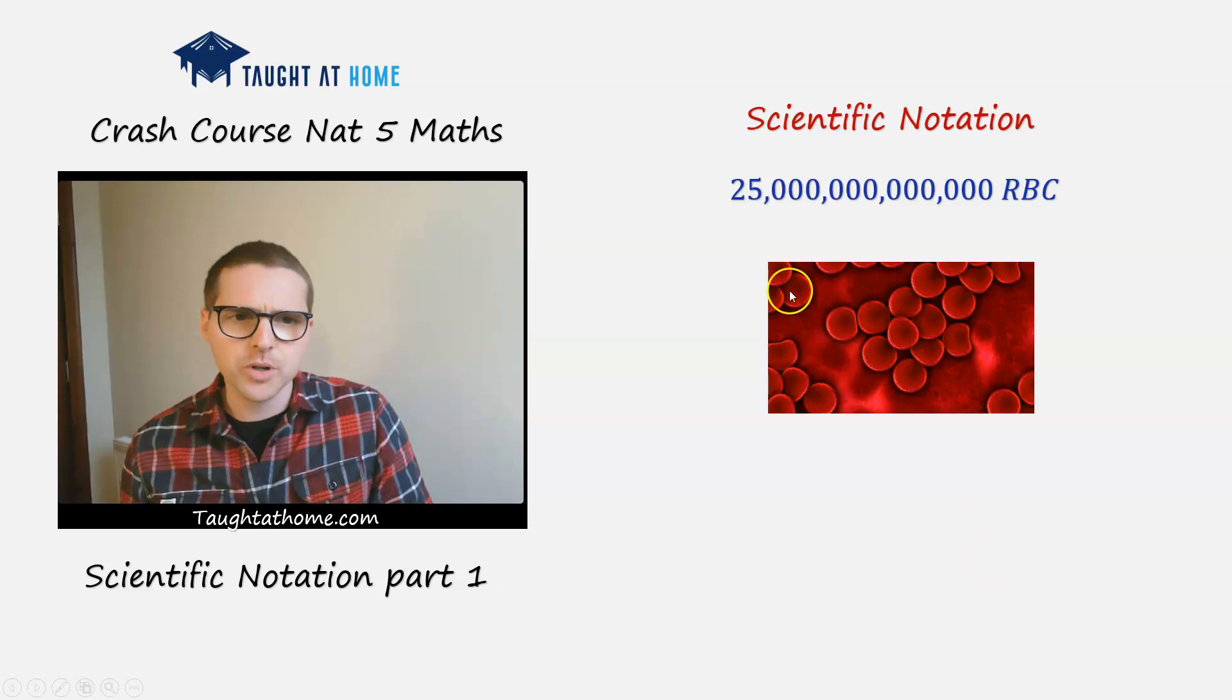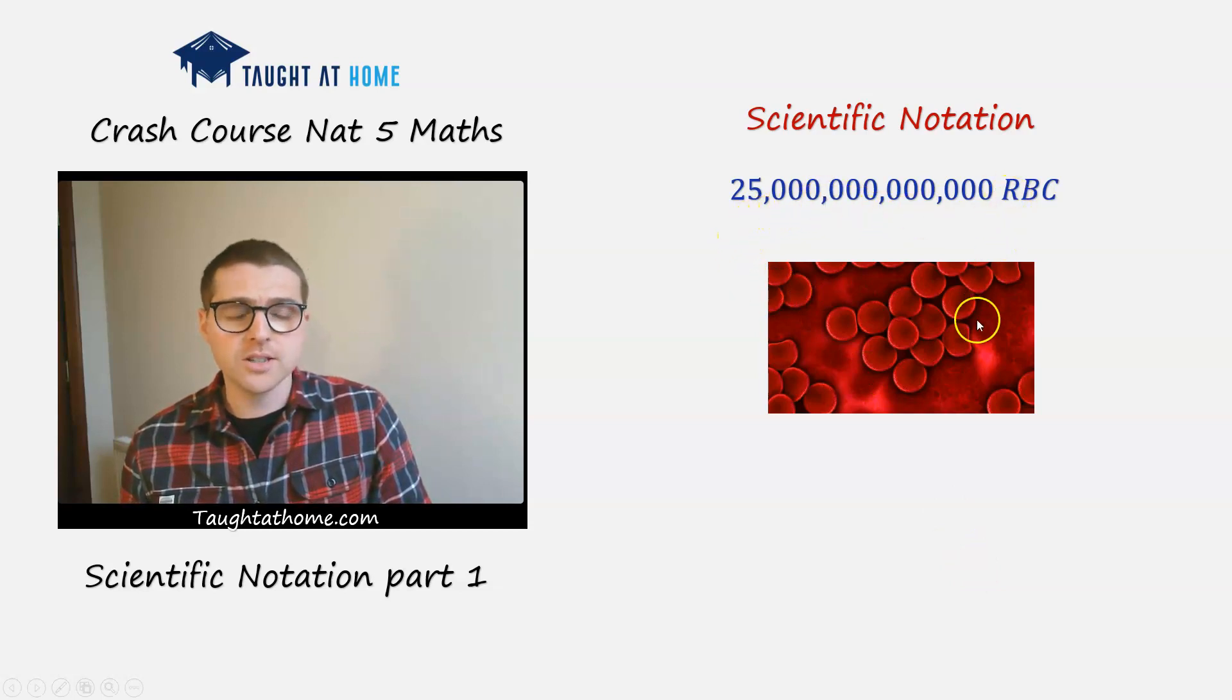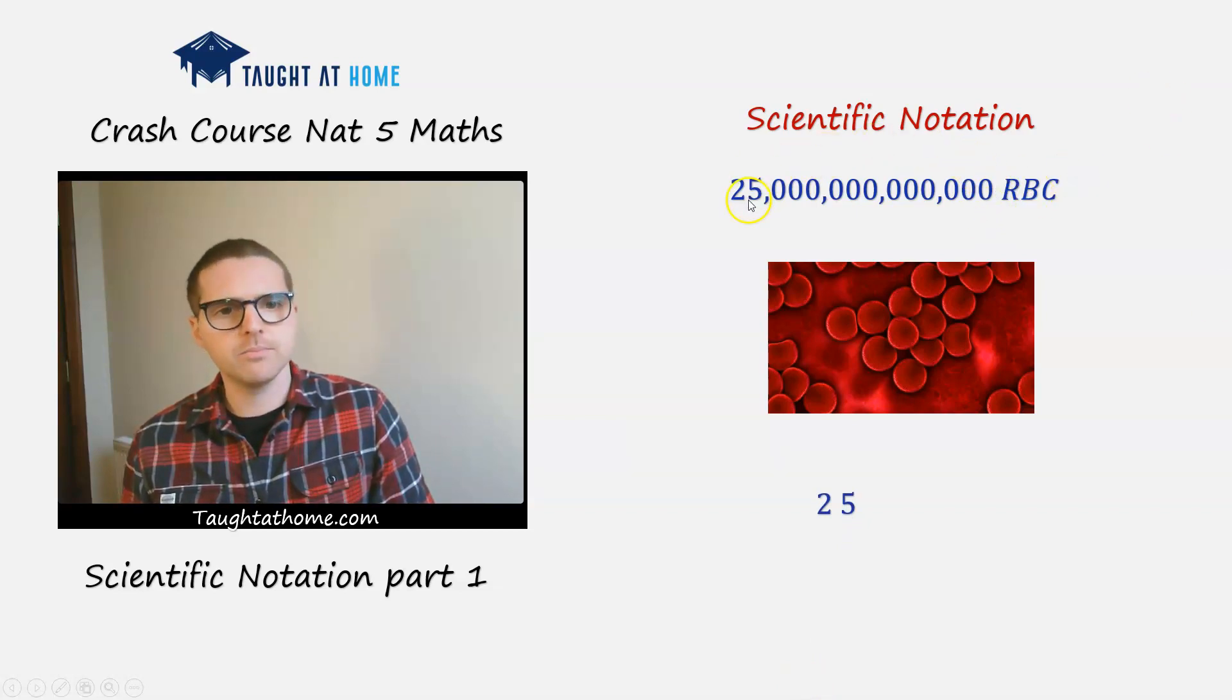How many red blood cells? We've got 25 trillion red blood cells. So we're going to take the 2 and the 5. And remember, the decimal point is here. And we're going to shift it between the 2 and the 5.